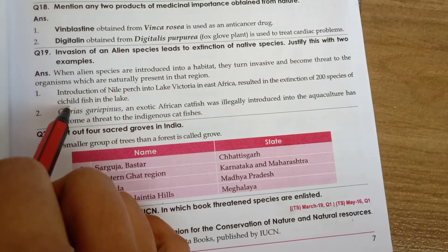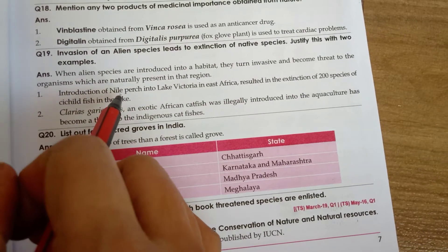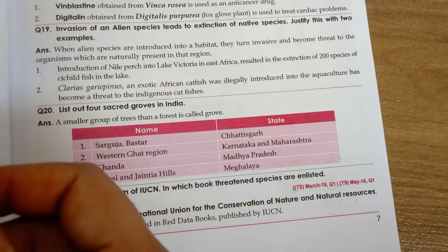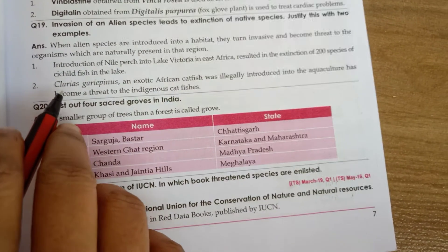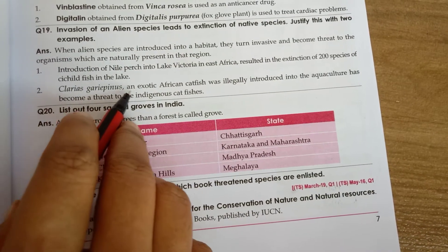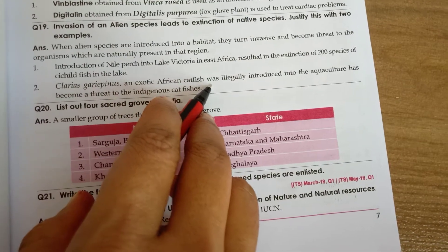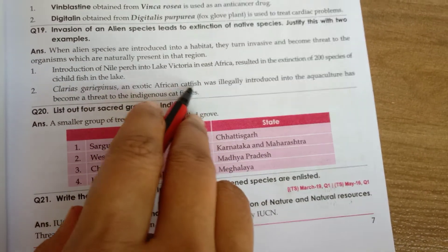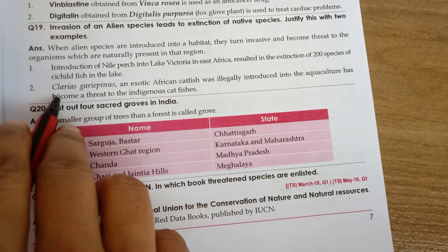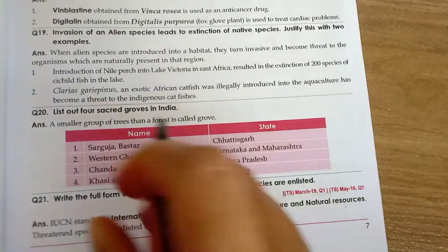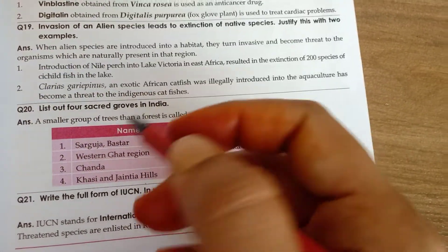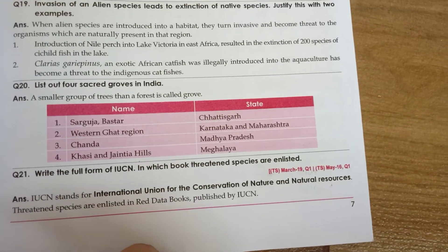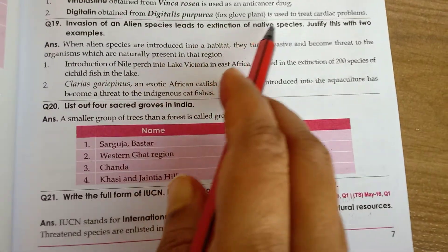The Nile Perch, once introduced, eliminated existing cichlid fish species. Example 2: Clarias gariepinus, an exotic African catfish, was illegally introduced into aquaculture and has become a threat to indigenous catfishes. This demonstrates that introduction and invasion of alien species leads to extinction of native species.